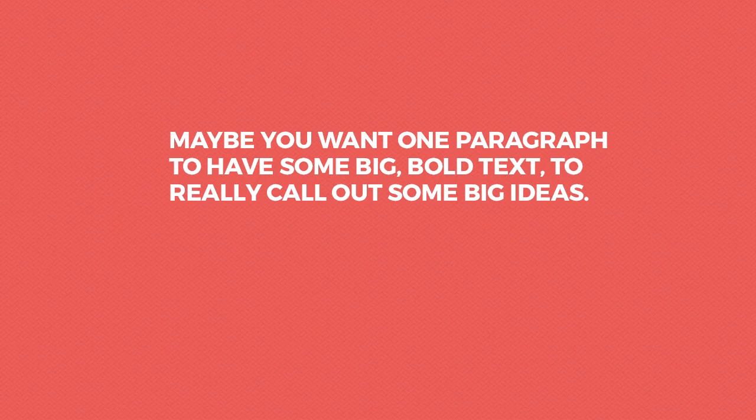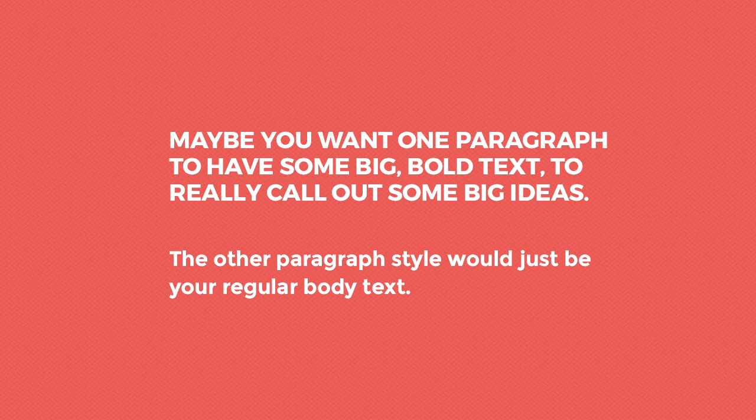So to date we've been using HTML tags like p tags or h2 tags as our CSS selectors. This has worked great so far, but what if you run into a situation where you actually want two paragraphs and you want them to be styled differently? For example, one paragraph you want big and bold to call out some big bold ideas, while the other paragraph needs to just be regular body text. The answer is that you would use a CSS class or ID.